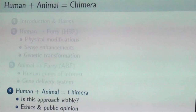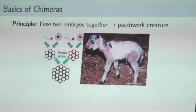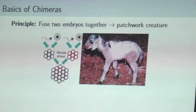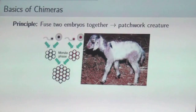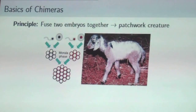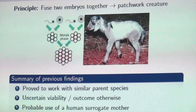The last part is about chimeras — creating a literal hybrid of human and animal cells. The principle: create two embryos, one human and one animal, fuse them together, and obtain a hybrid creature that is a patchwork of tissue from each parent — like a geep, a goat-sheep chimera. This has been proven to work with parent species that are similar, but it is uncertain whether it would be viable using human and dog, for example. You would probably need a human surrogate to allow them to grow and develop correctly.